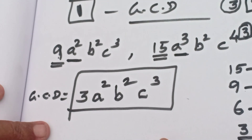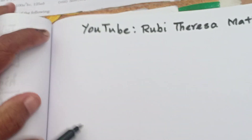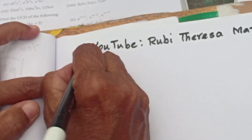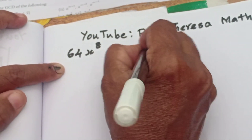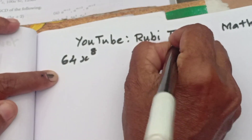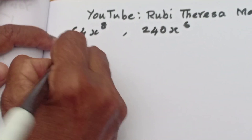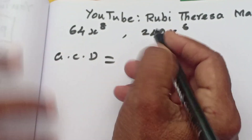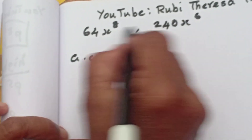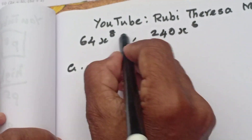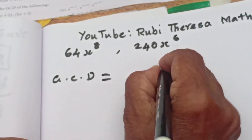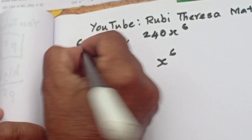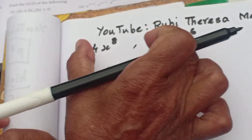Next: 64 x to the power of 8 and 240 x to the power of 6. Find the GCD. x to the power of 6 is the GCD for the variable part — take the lowest exponent of the same base.